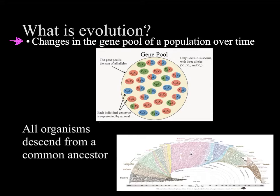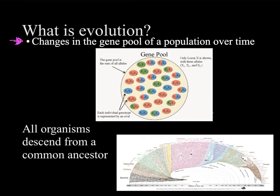We're going to look at how that occurs in this video. Another important thing to keep in mind is that all organisms descend from a common ancestor, which is kind of what we can see here. This would be our first organism that ever appeared on Earth, and then we get all of these different organisms that have branched out, which we'll get into later on.